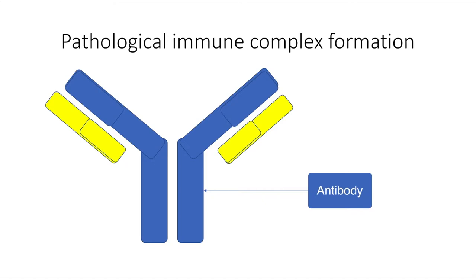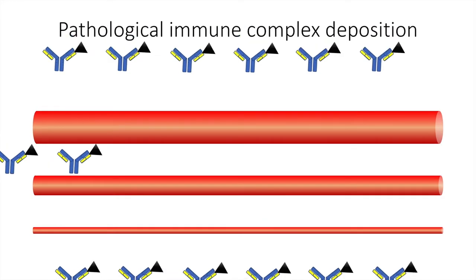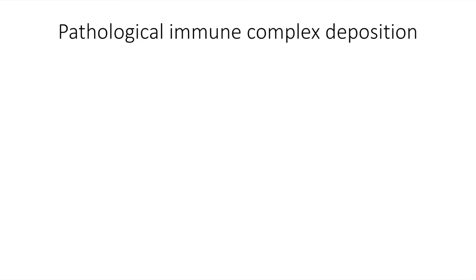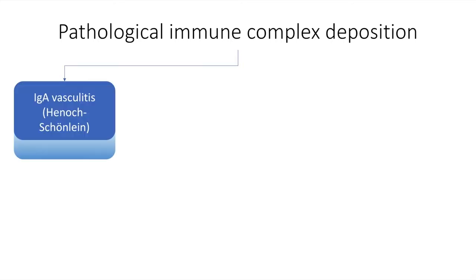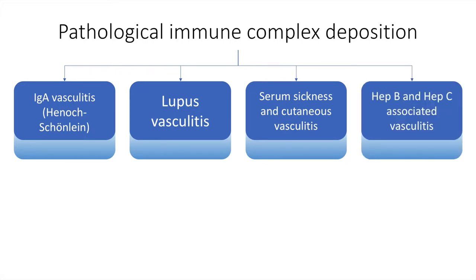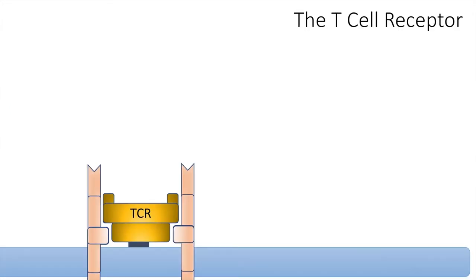This is the schematic diagram of an antibody with antigen attached to it. There might be pathological immune complex deposition around the vasculature resulting in the clinical features of vasculitis. Conditions under this classification include IgA vasculitis or Henoch-Schönlein purpura, lupus vasculitis, serum sickness, cutaneous vasculitis, and hepatitis B and hepatitis C associated vasculitis.